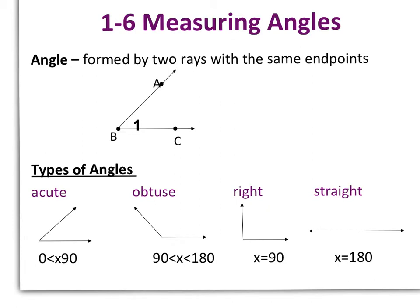A right angle is an angle that is exactly 90 degrees, and a straight angle is an angle that is exactly 180 degrees, also known as a straight line.